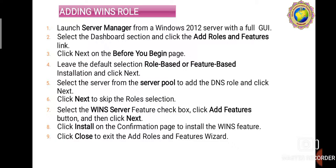Then select the Dashboard section and click the 'Add Roles and Features' link, and then click Next on the Before You Begin page. Leave the default selection 'Role-based or Feature-based Installation' and click Next. Select the server from the server pool to add the WINS role and click Next. Click Next to skip the Roles section, then select the WINS Server Features checkbox and click the 'Add Features' button, then click Next.